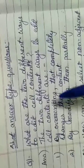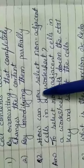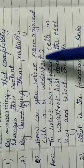different ways to edit cell contents are number one, by overwriting that completely changes the content; second, by modifying them partially. Now the second question is: How can you select non-adjacent cells in a worksheet?